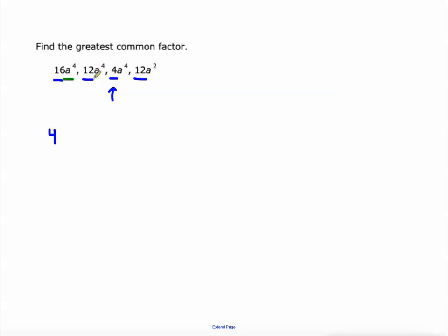What about the a values here, a to the fourth, a to the fourth, a to the fourth, a squared, we take the smallest exponent. So 4a squared is the GCF of these terms, they're all divisible by 4a squared.